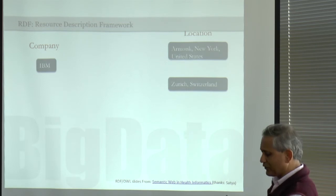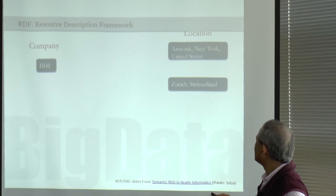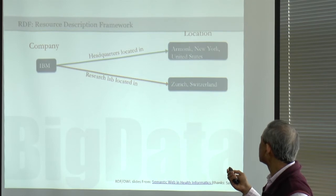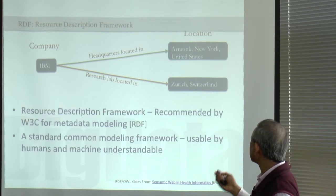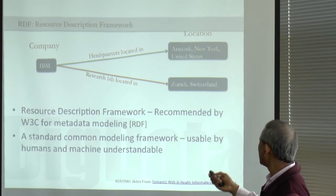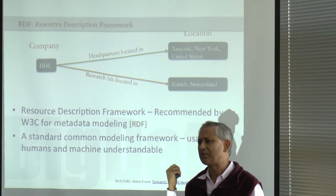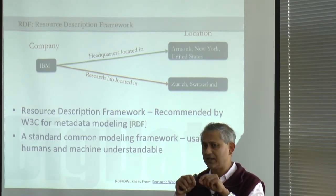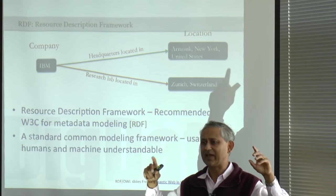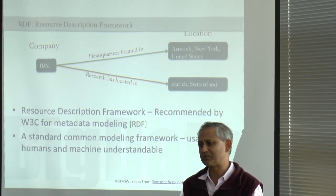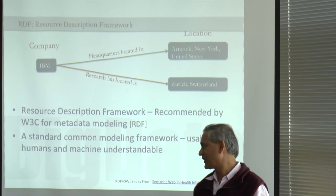Let us give a very brief introduction to RDF — Resource Description Framework. You can capture things like: a company has headquarters located in a particular location, and has a research lab located in another location. It started around 1998. I remember having a paper in 1998 that used RDF to describe links between two objects on the web. We developed something called 'mref' and used RDF to capture the metadata of that link. It has taken quite a bit of time for its adoption in mainstream industries.